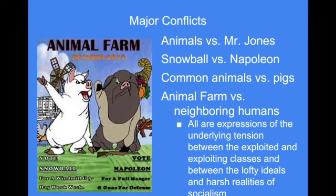The major conflicts to watch for: the animals versus Mr. Jones in the beginning, then watch as the two pigs Snowball and Napoleon first work together and then don't. Once the pigs are in control, watch the difference between the common animals versus the pigs. And once manor farm settles into animal farm, watch how Animal Farm differs versus the neighboring humans. All are expressions of the underlying tension between the exploited and the exploiting classes, between the lofty ideals of politics and the harsh realities that come with socialism.